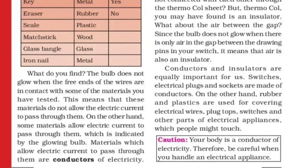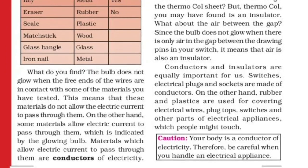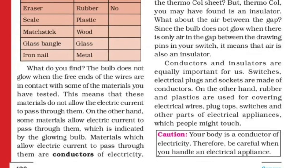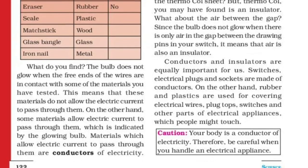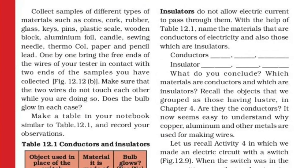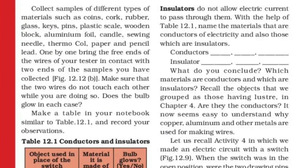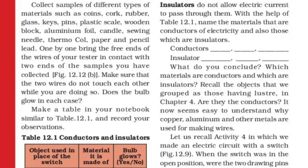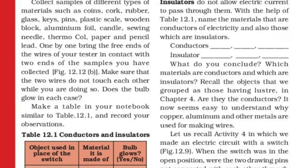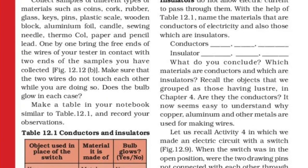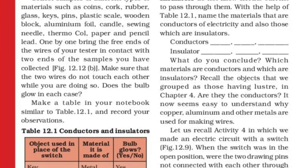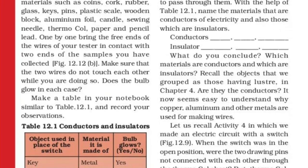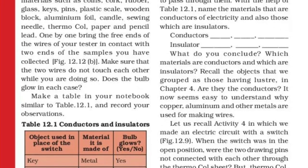The materials that do not cause the bulb to glow are insulators. The materials that do cause the bulb to glow are conductors. Insulators do not allow electric current to pass through them. Now, which materials are conductors and which are insulators?